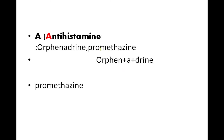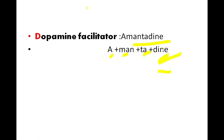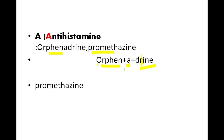Antihistamines — examples are orphenadrine and promethazine. For orphenadrine: think of an orphan who is dying — 'orphan-a-drine'. Promethazine you likely already know. These are the antihistamine drugs in anti-Parkinsonian classification.